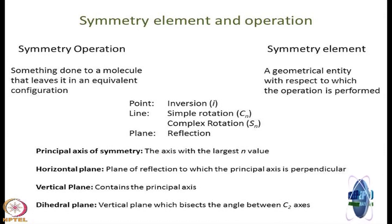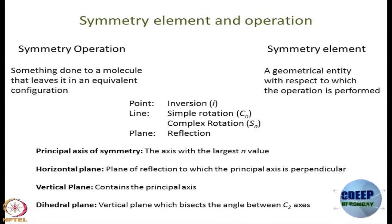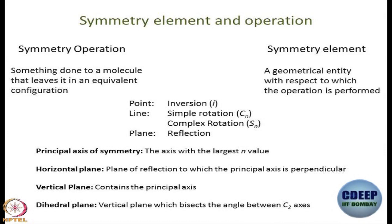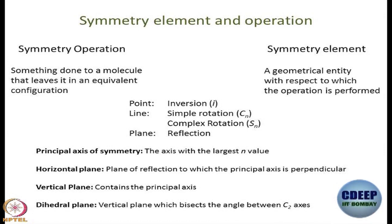The principal axis of symmetry is the axis with the largest value of N — but be careful: that means the axis about which we turn by the smallest angle to get the equivalent configuration. N is large, and N is in the denominator, so don't forget that. A horizontal plane is a plane to which the principal axis of symmetry is perpendicular. A vertical plane contains the principal axis of symmetry. And dihedral planes arise when, in addition to the principal axis, you have C2 axes perpendicular to it, and there is a vertical plane that bisects the angle between those C2 axes.